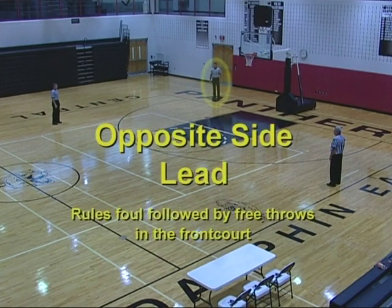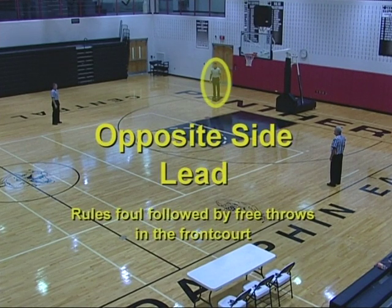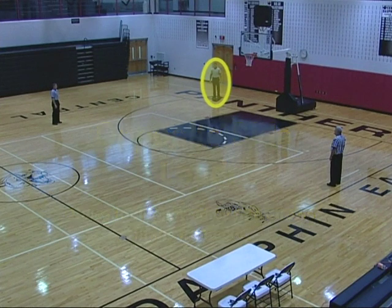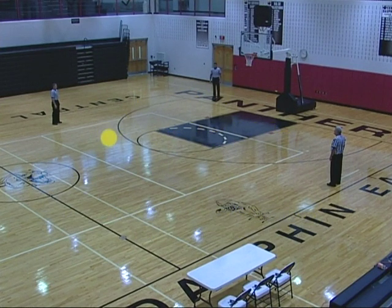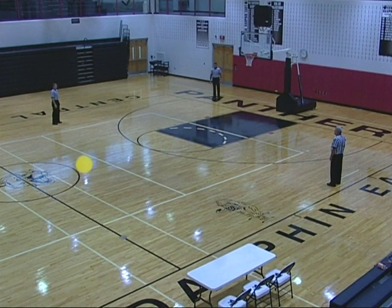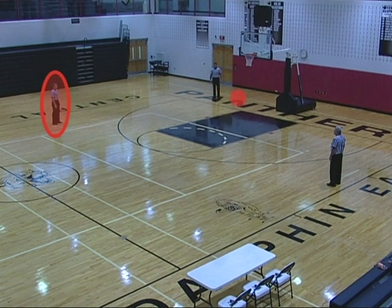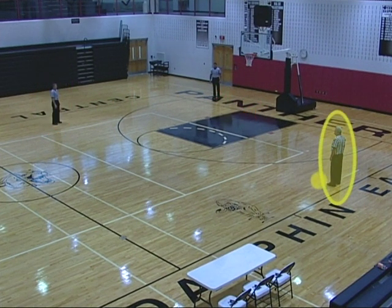Opposite side lead rules foul, followed by free throws in the front court. Proceeds to the reporting area, reports the foul, and becomes the opposite side center. The opposite side trail becomes table side lead and handles the free throw. Table side center becomes table side trail.